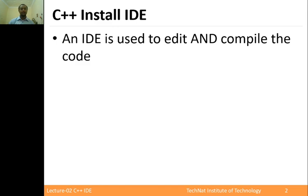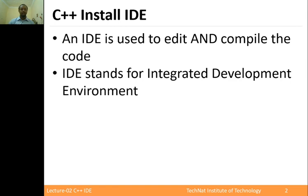This is the programming language. This is a program, a source code. This is an editor. A computer understands machine code directly. Once you have source code, you need an integrated development environment. It is a compiled component — the editor, the compiler, and the linker.